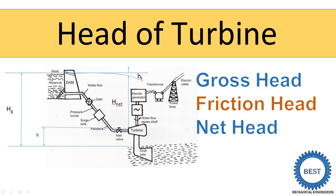The two places are: the first place is the head race or reservoir, and the second place is the tail race. Water is transferred from the upper direction to the downward direction, or from downward to the upper direction. The difference between these two places is called the head. Now we will study the gross head, friction head, and net head.